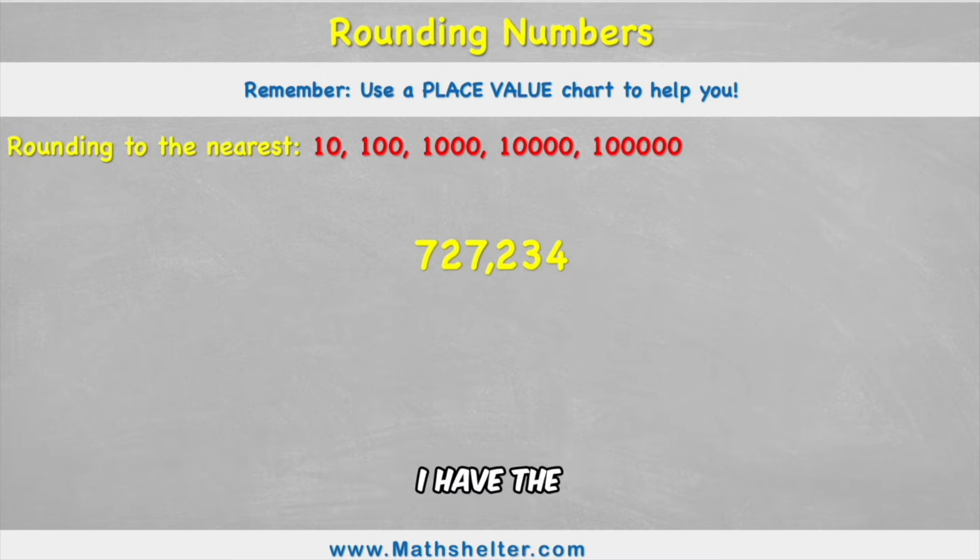In this first example I have the number 727,234. If you're unfamiliar with reading numbers as large as this go back to my other video looking at place value of large numbers. But let's begin. It said to use a place value chart to help us. So that means I'm going to put my ones, tens, hundreds and now I'm in my thousands block. I can use thousands, 10,000 and 100,000 to help me.